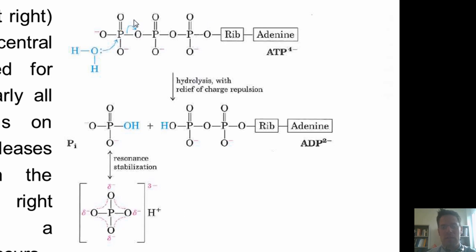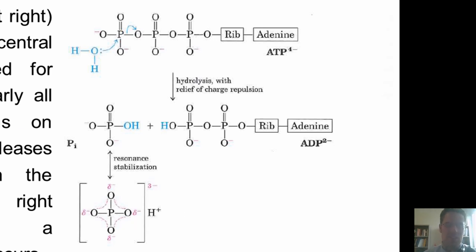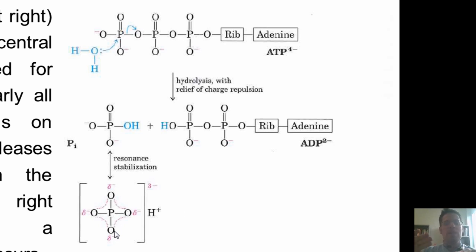So one of the reasons that this process releases so much energy is simply because the products that it makes are much more stable than the reactants it starts with. Moving from the triphosphate structure to the phosphate releases a tremendous amount of energy. And why is this phosphate so stable? The reason is because of resonance — the ability for those negative charges to smear or delocalize across all four of the oxygens in that molecule.